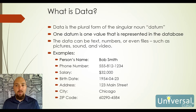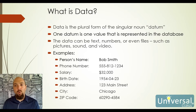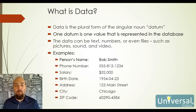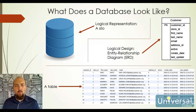Examples of data include things like a person's name — so we have Bob Smith — his phone number, his salary, his birth date, which you'll notice is in the format of year-dash-month-dash-date, his address, his city, and a zip code. Now, a zip code is actually not a numerical value. A zip code includes the hyphen because in some areas you have to use the 5-4 format for a zip code, so we actually use that as text.